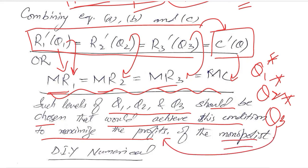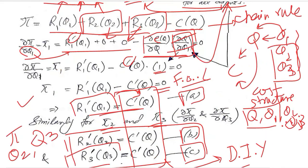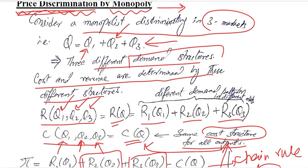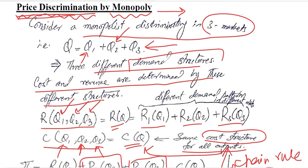So you can take some numerical example and see if this condition holds. However, this video was about the symbolic understanding of the price discrimination condition of a monopolist where it is able to maximize the profit. Thank you.